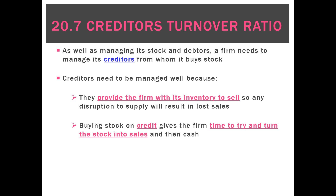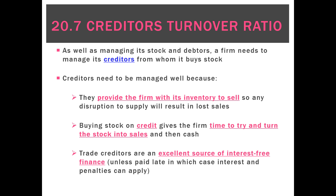Buying stock on credit gives the firm time to try and sell that stock and turn it into cash before we pay the creditor back. Otherwise we'd have to pay cash upfront for our stock, and that puts more pressure on the business to sell it quickly. So we'd like to be able to buy on credit because it buys us a little bit of time in order to sell the inventory.